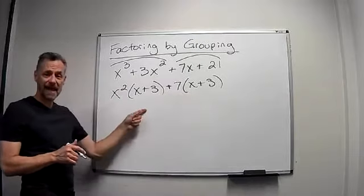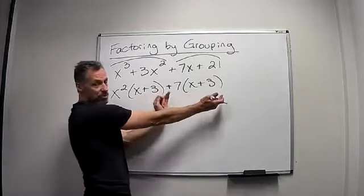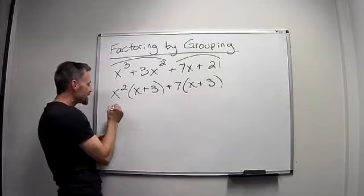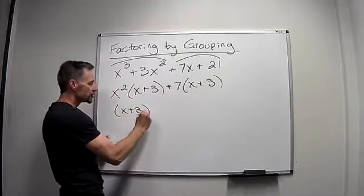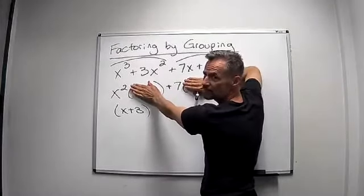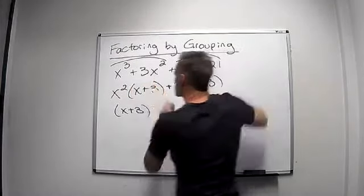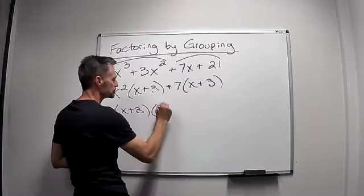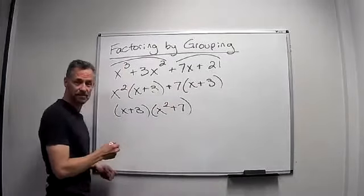But since those are the same there's only two terms left. I can factor that x plus three, it's common to both terms, and notice when I factor it out that's gone and that's gone. All I have left is that x squared plus seven. And that's my answer.